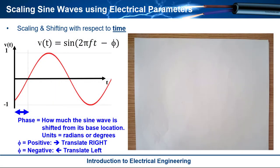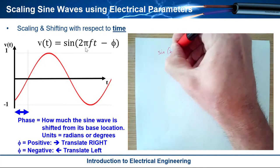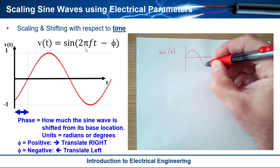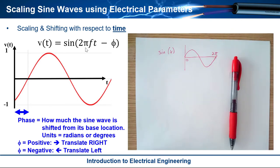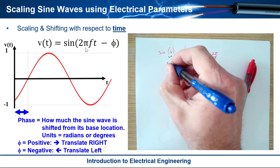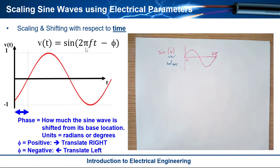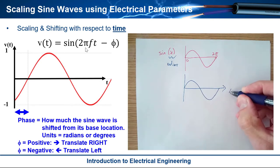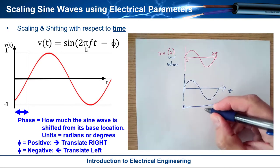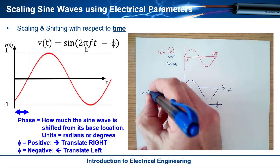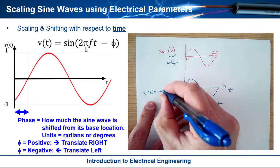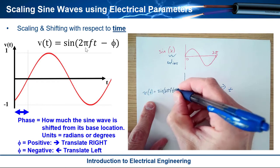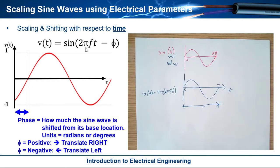At this point, we've seen how we can scale the period of a sine wave by applying a scaling factor to the equation sine of 2πft. We have sine of x as the base function — a sine wave that goes from 0 to 2π, where the argument is in radians. But that doesn't really help us when we want to talk about real signals that vary with time and have a period T.